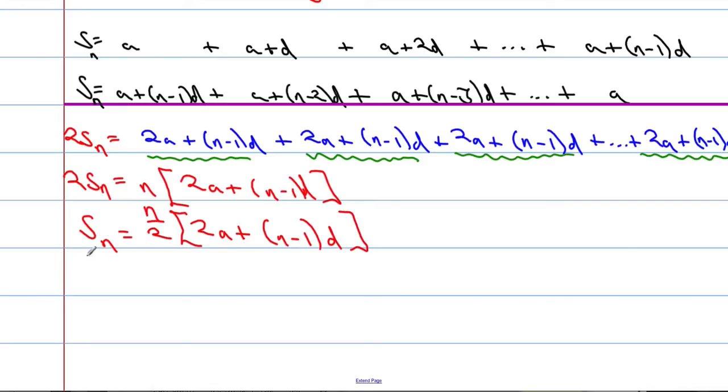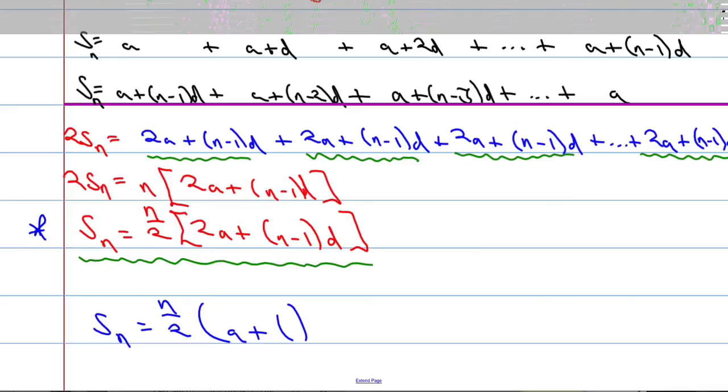And this, ladies and gents, is the formula to work out the sum of n terms of a sequence or the sum of the series. Now it is important that we know how to prove this. It can also be shown that the sum can be equal to n over 2 times a plus l, where l is the last term. So if you know the first term and the last term, and the amount of terms in the sequence, we can work out the sum as well. I'm not going to prove this one just yet. We'll do that in a later video.